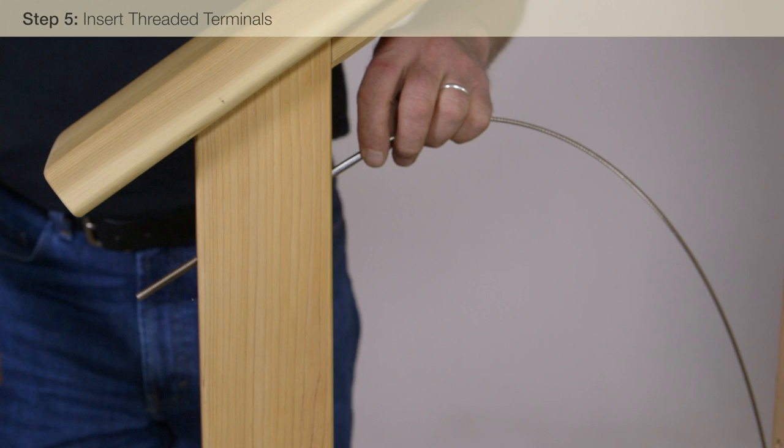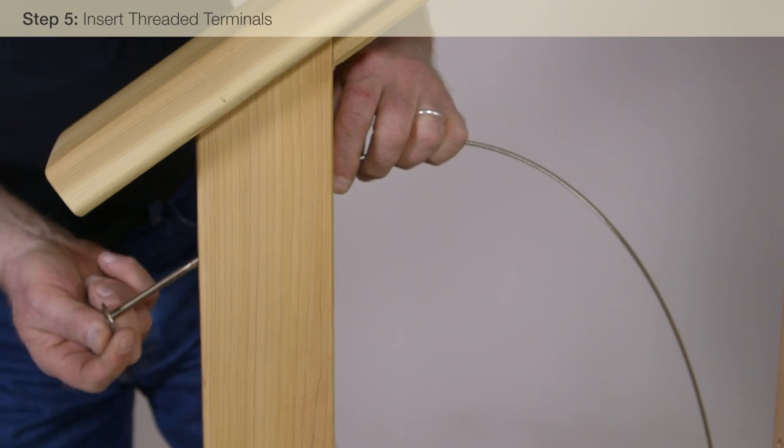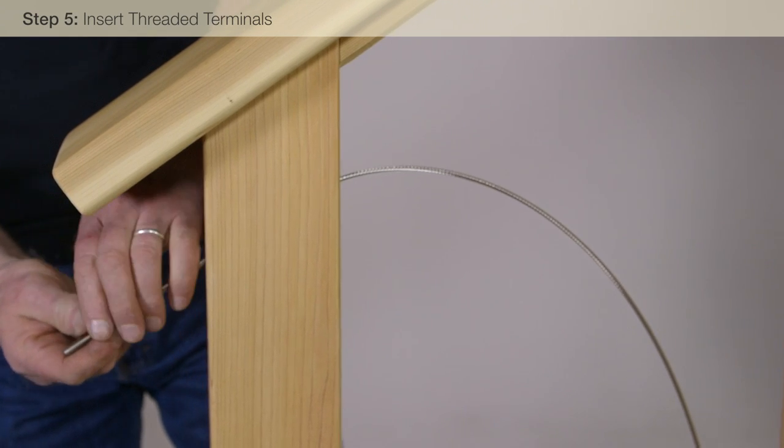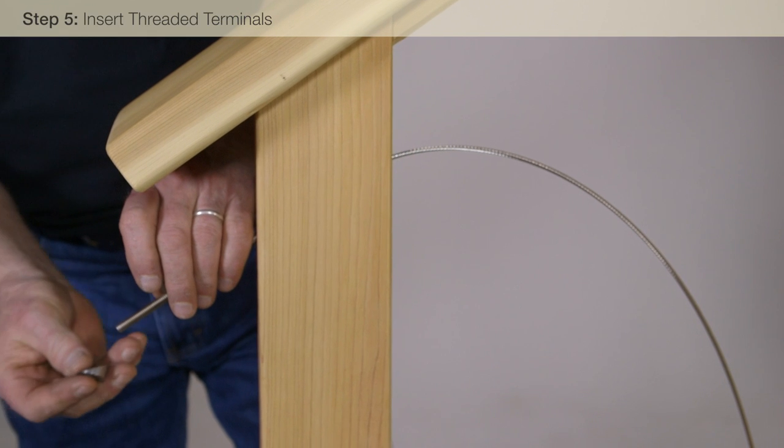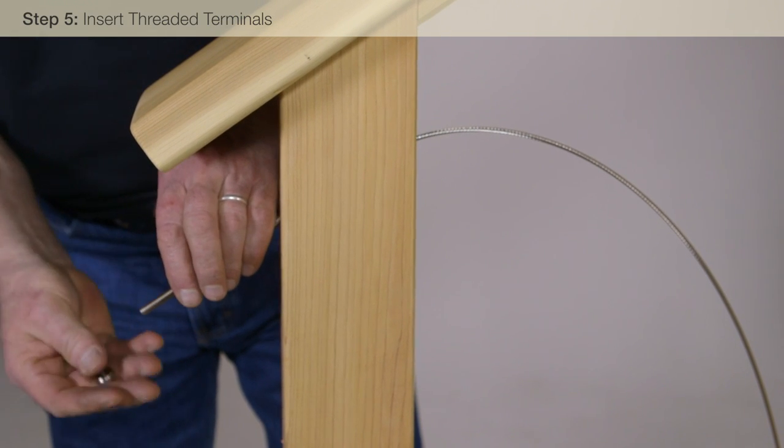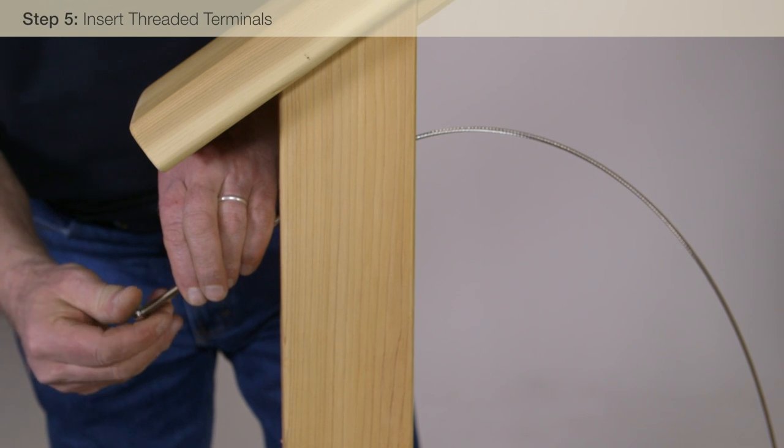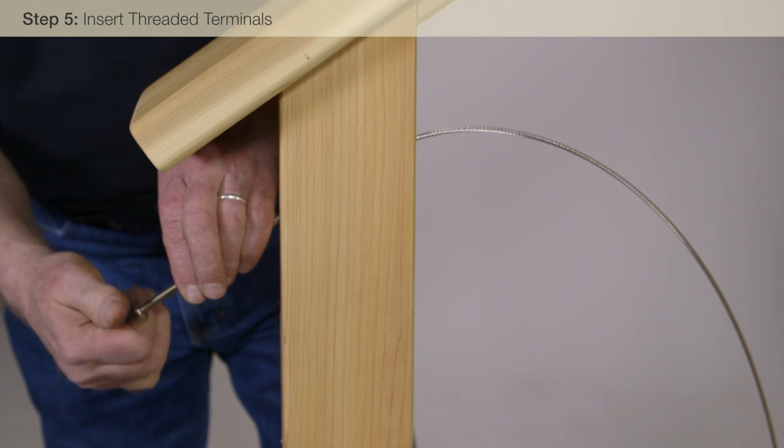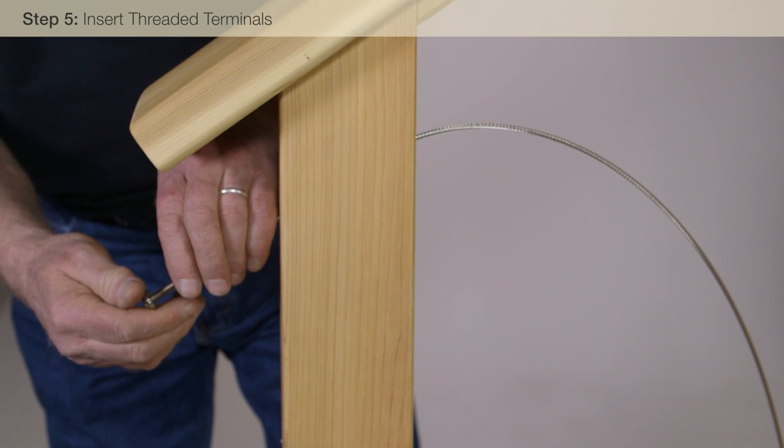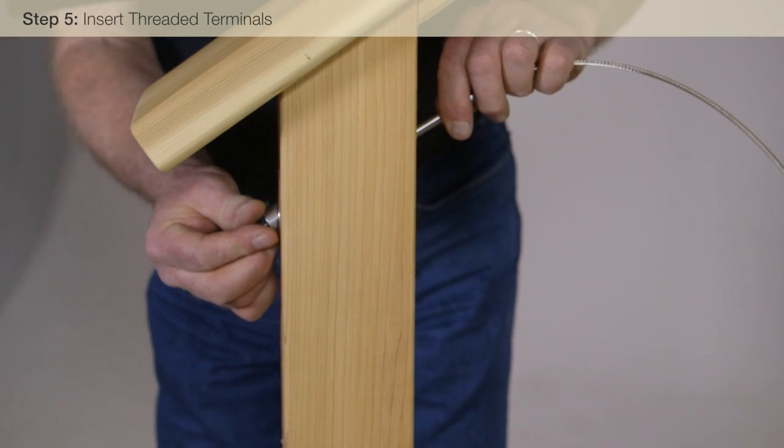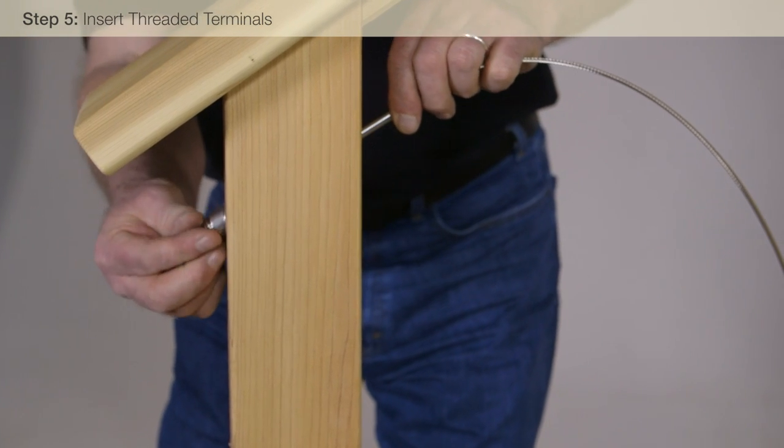We are now ready to install the cables. Insert the threaded terminal in the bottom stair post hole and secure with a flat washer, a beveled washer, and a snug grip washer nut. The beveled washer provides a flat bearing surface for the washer nut. Tighten the nut two to three full turns or until you feel resistance from the snug grip threads.